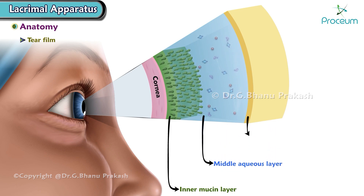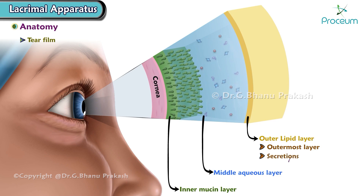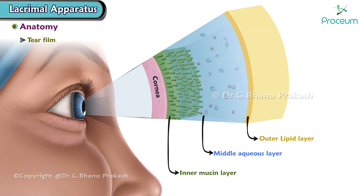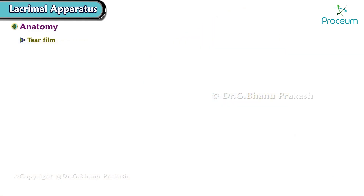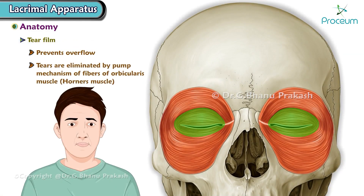3. Outer lipid layer — it is the outermost layer, having secretions of the meibomian gland, Zeis glands, and Moll glands. Tear film prevents overflow of tears, and tears are eliminated by the pump mechanism of fibers of orbicularis muscle, also known as Horner's muscle.